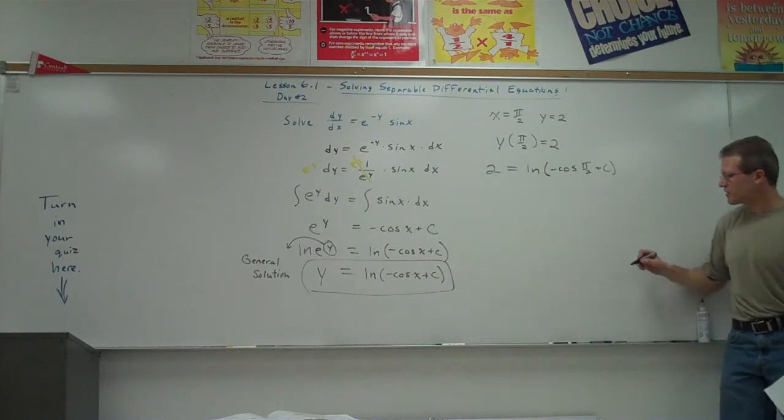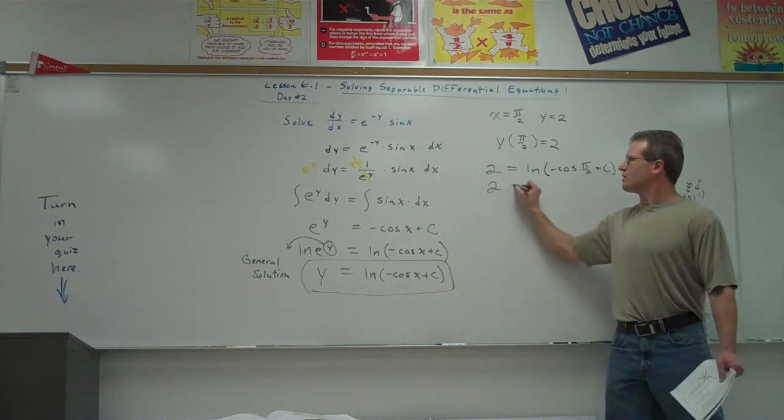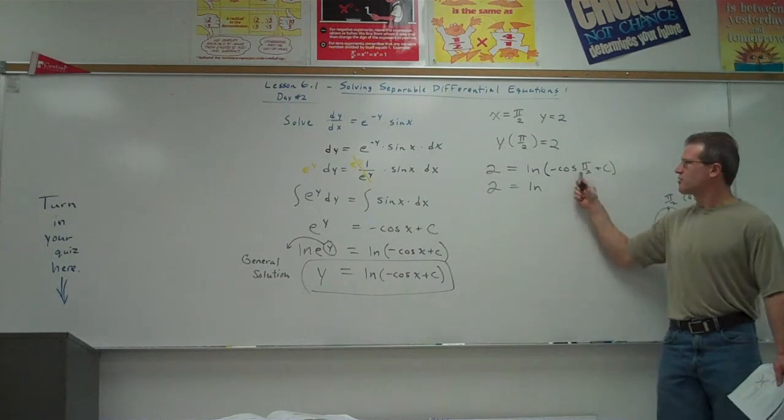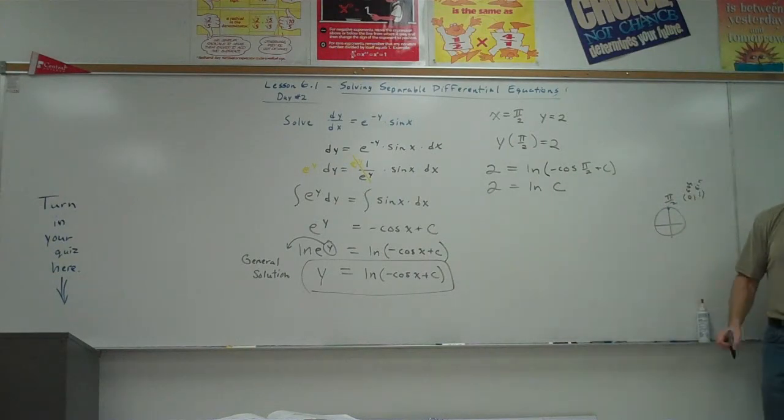And cosine of pi halves, you're going to have to think about it. You're going to get a circle. There's pi halves. That's the point 0, 1 right there. This is your cosine, this is your sine. So the cosine's going to be what? 0. So you get 2 equals the natural log of 0 plus c, which would just be c. Now we have to solve for c. That's what we're trying to do.